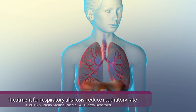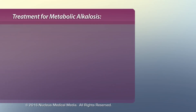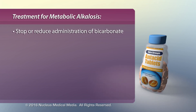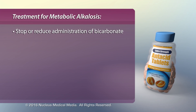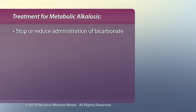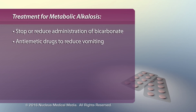Primary treatment for respiratory alkalosis is reduction of respiratory rate to allow carbon dioxide to return to normal levels. Treatment for metabolic alkalosis from excess bicarbonate intake includes decreasing bicarbonate administration while allowing the kidneys to excrete the excess. For metabolic alkalosis resulting from vomiting, administration of anti-emetic drugs will reduce nausea and vomiting.